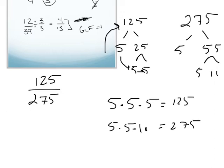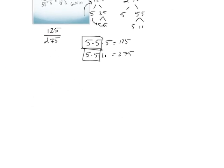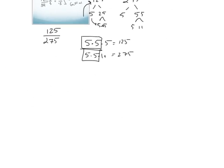If I look here, I can go and circle the common factors, which is 5 times 5, which then tells me that 25 is the greatest common factor of 125 and 275.